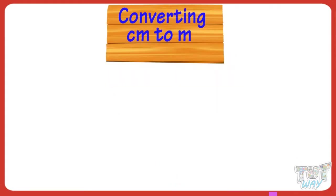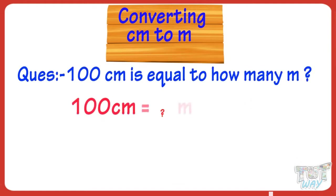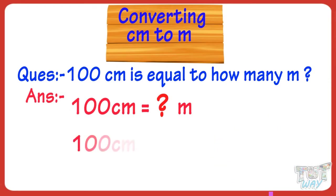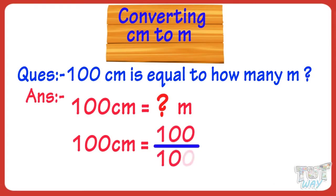Now let's learn converting centimeters to meters. 100 centimeters is equal to how many meters? For converting centimeters to meters, we divide by 100, as 1 meter equals 100 centimeters. So 100 centimeters equals 100 divided by 100, which gives 1 meter.